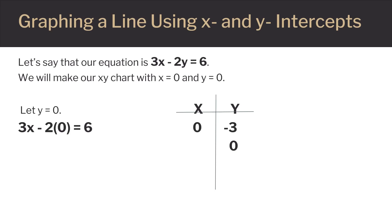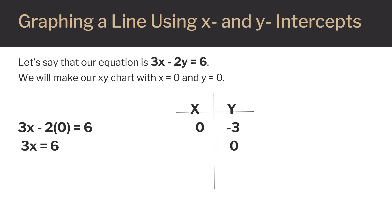Next, we let y equal 0. We have 3x minus 2 times 0 equals 6. This simplifies to 3x equals 6. Dividing both sides by 3, we get x equals 2. We now have our second ordered pair at (2, 0).